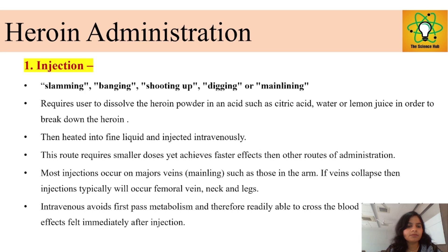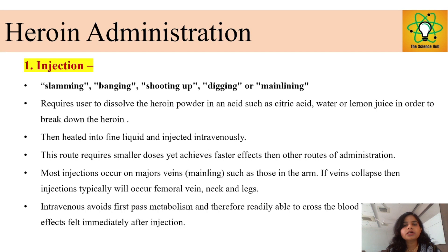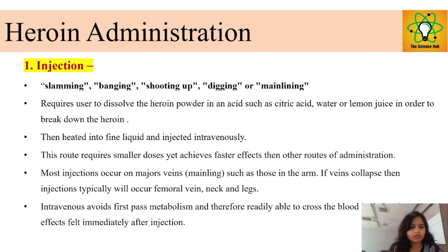For injection, common slang terms include slamming, banging, shoot up, and digging. It requires dissolving heroin powder in acids such as citric acid, water, or lemon juice to break it down. The solution is heated into a fine liquid and injected into the veins. This intravenous route requires a small dose, has high potency, and reacts faster in the body. It avoids the first pass of metabolism, allowing the drug to readily cross the blood-brain barrier and take effect immediately.